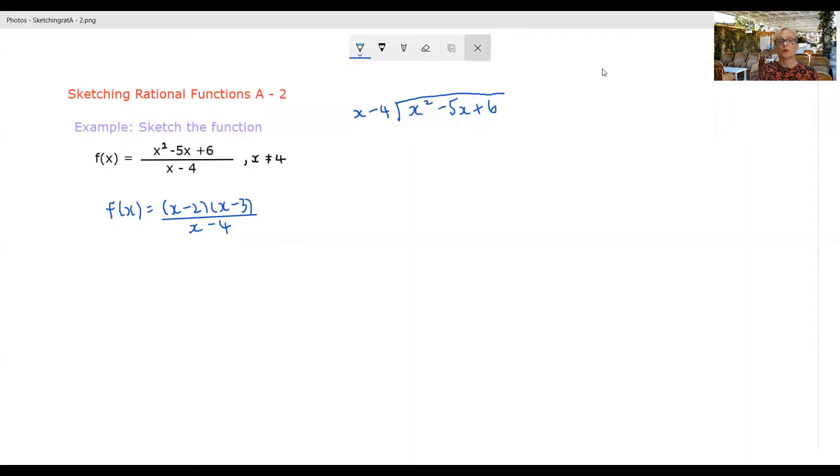So we're going to divide leading term. And we're going to get x here. Then we're going to multiply through. So x squared minus 4x. Do our subtraction, negative 5x minus negative 4x is negative x. Bring down our 6.